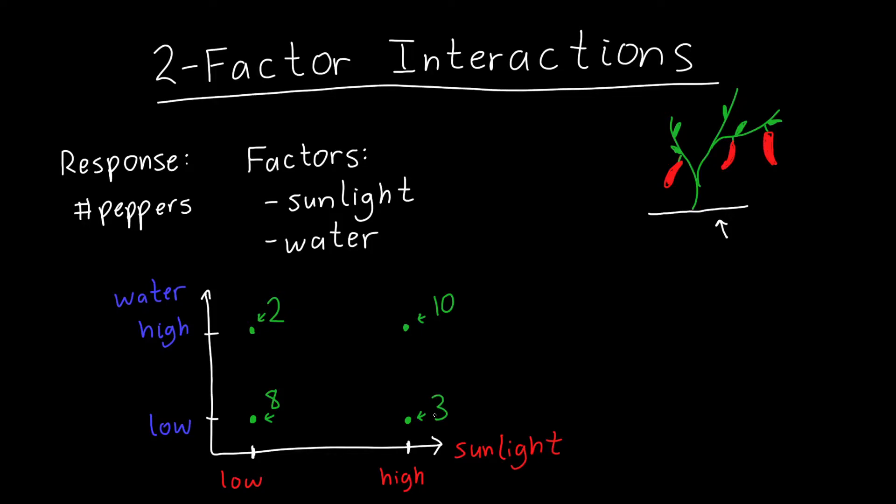And so how do I figure out what's going on here? How do I figure out what the effect of water is and what the effect of sunlight is? Well, previously, we learned that we could calculate the main effect for a particular variable. So, for example, the main effect of water by subtracting the average of the low amount of water from the average from the high amount of water. And in this case, we get 0.5 peppers.